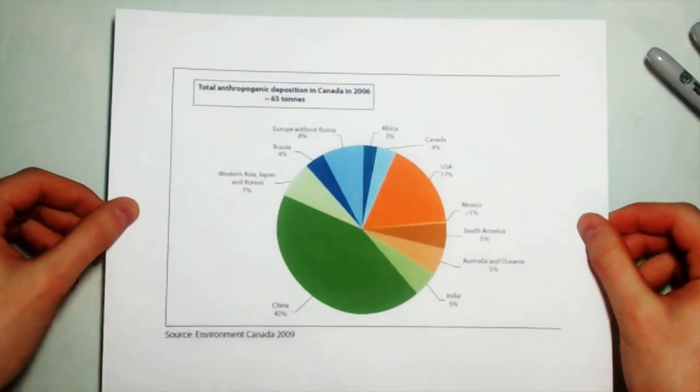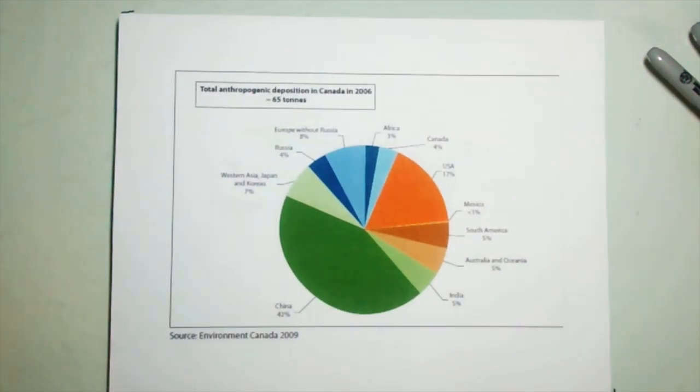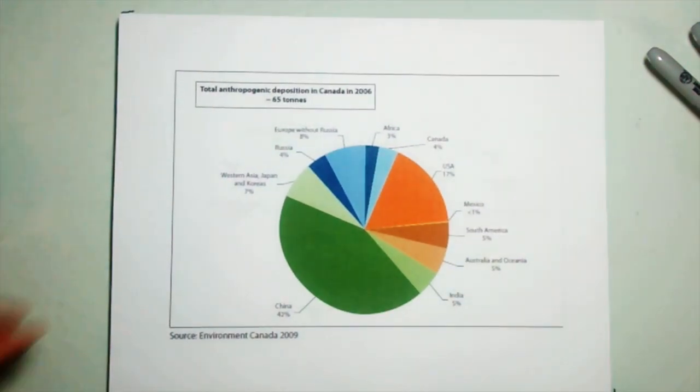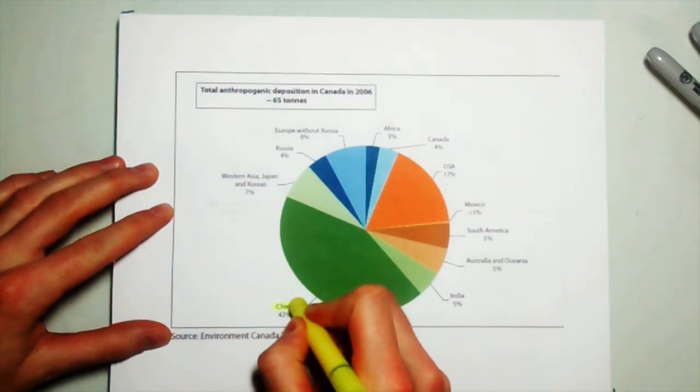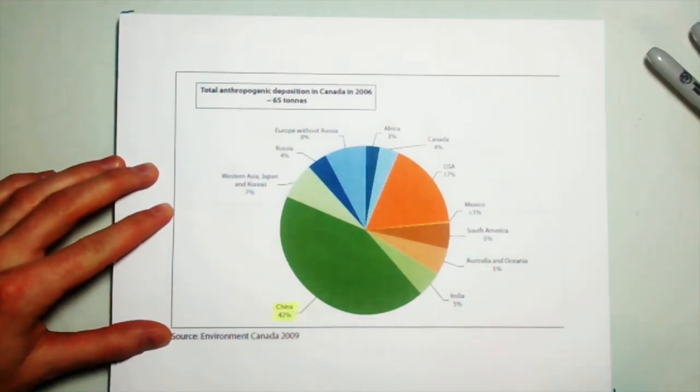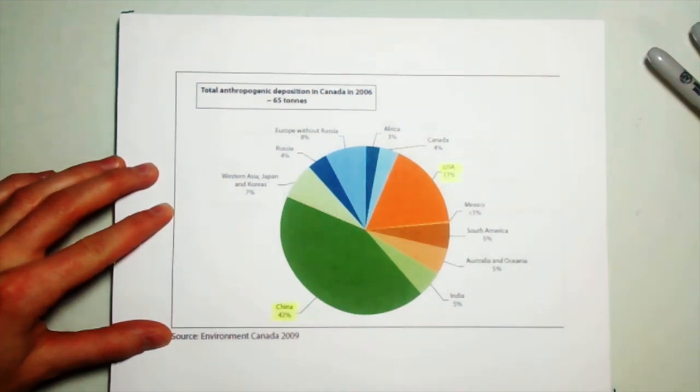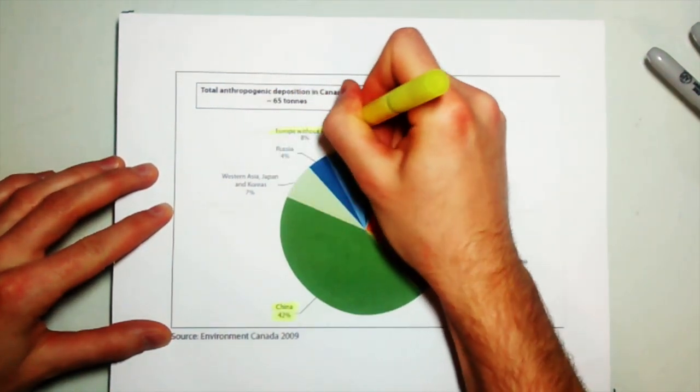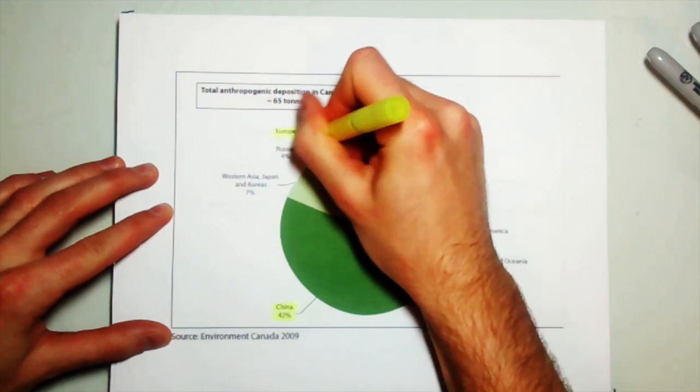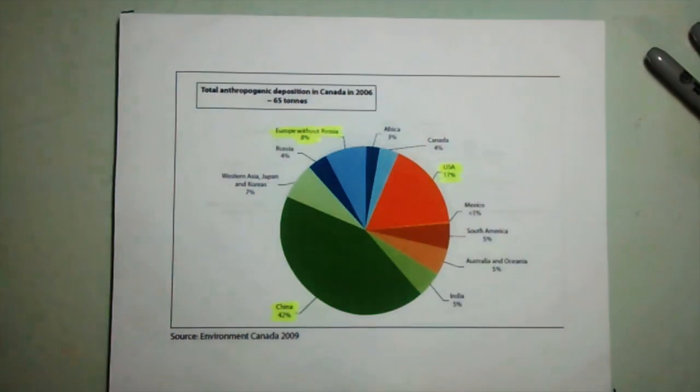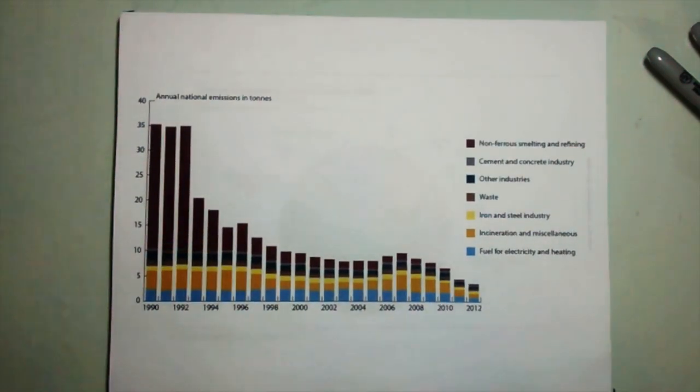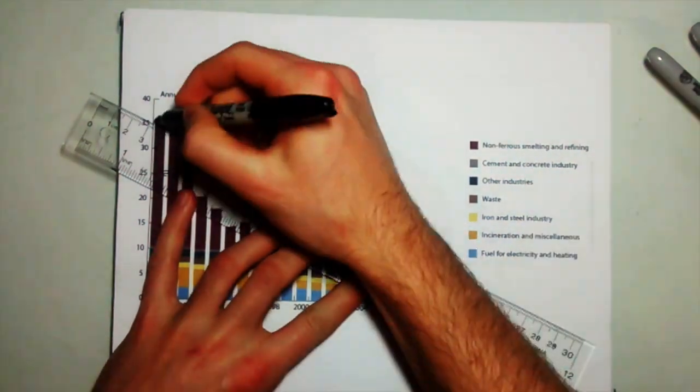This graph shows the deposition of mercury from other countries into Canada. The top three places the mercury deposited in Canada comes from are China, the USA, and Europe without Russia. This proves that mercury emissions are a global problem. Since the 1970s, Canada has been reducing its emissions by up to 90%. However, the deposition of mercury is now 95% from other countries. This graph shows how Canada has decreased her emissions over time. It is quite a dramatic change.